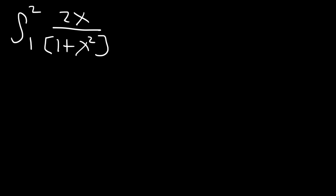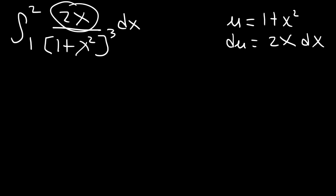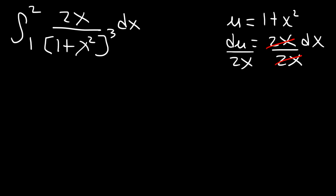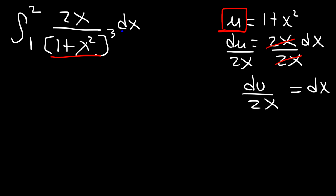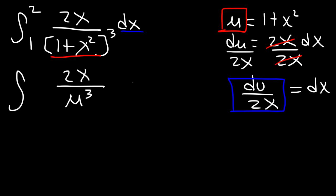Let's work on one more example: evaluate the definite integral from 1 to 2 of 2x times (1 plus x squared) raised to the 3rd power dx. We make u equal to 1 plus x squared, because du — the derivative of 1 plus x squared — is 2x dx, so we can cancel the 2x. Dividing both sides by 2x gives dx equal to du over 2x. Replacing 1 plus x squared with u and dx with du over 2x, the 2x cancels, leaving the integral of 1 over u to the 3rd.